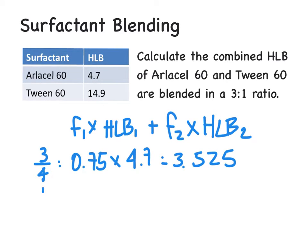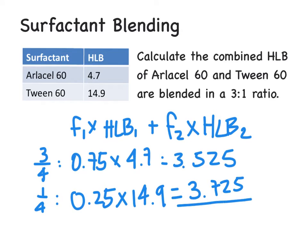We do the same thing for the Tween 60. One part out of 4 is 25% fraction times the 14.9, which is 3.725. So we can add these together, and we come up with a value of 7.25. So that's how you would do that type calculation.